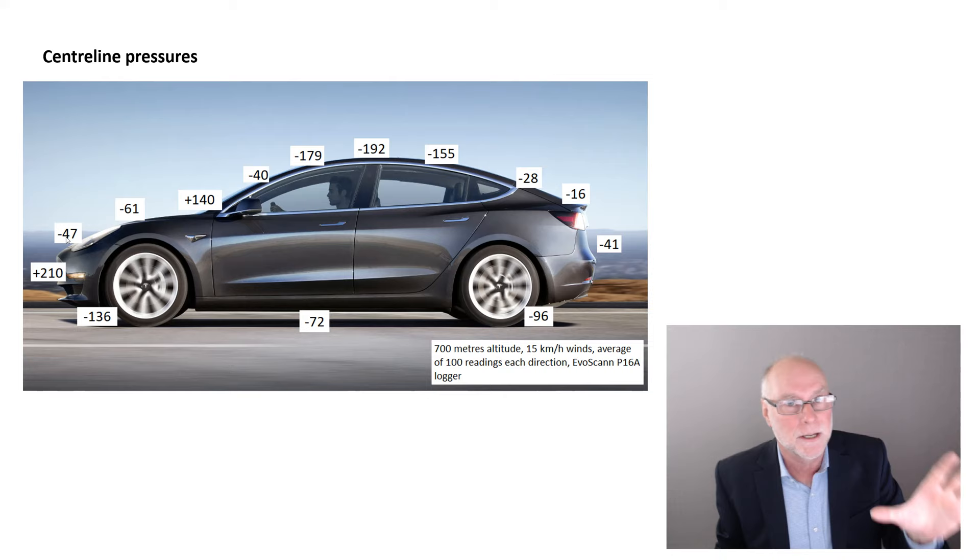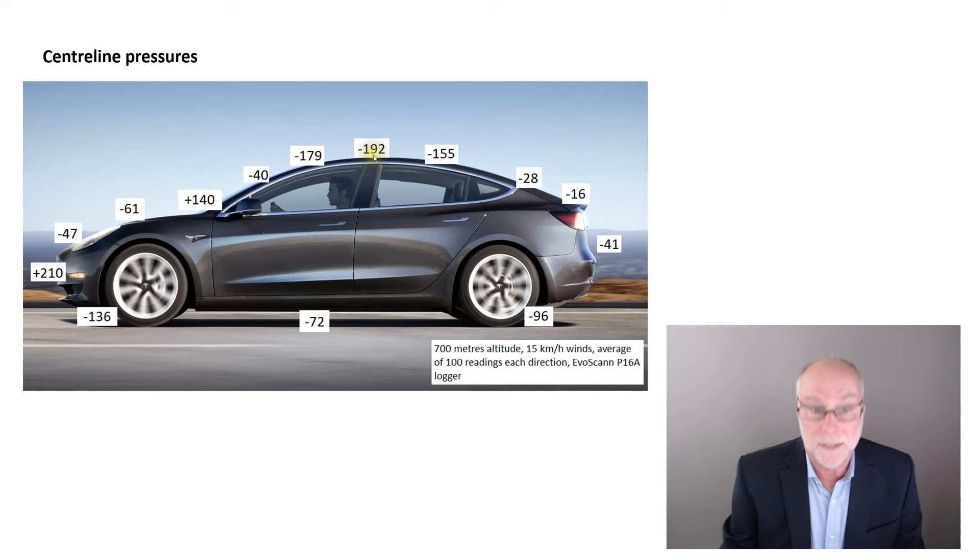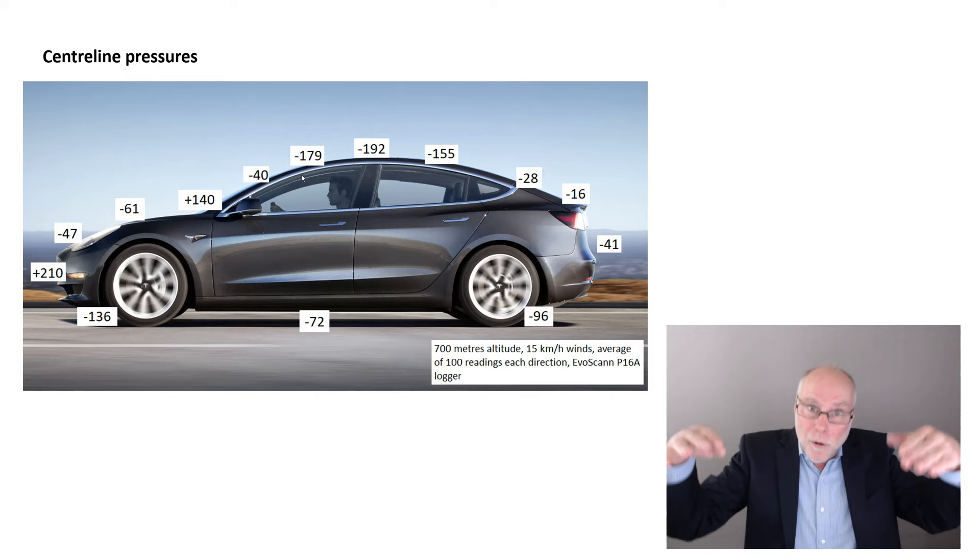We can see, as we go across the top of the roof, a car with a lovely curve all the way across. Minus 40, pulling, minus 179, not just 79, 179, pulling upwards. Minus 192, pulling, minus 155, pulling upwards. Well, lots of pull upwards from those low pressures. What about under the car? Are there any pull downwards?